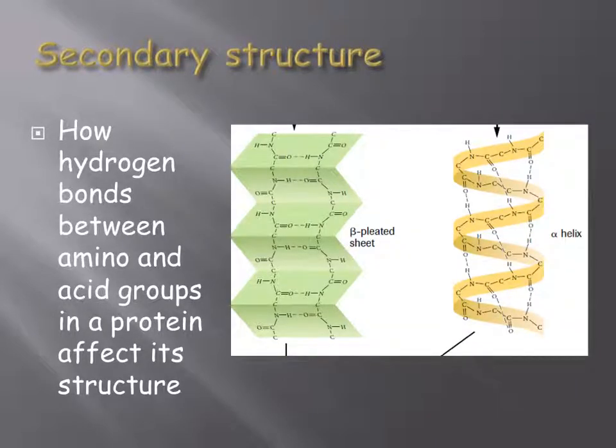The secondary structure of a protein describes how it would appear due to hydrogen bonding between the amino and acid groups of a protein.